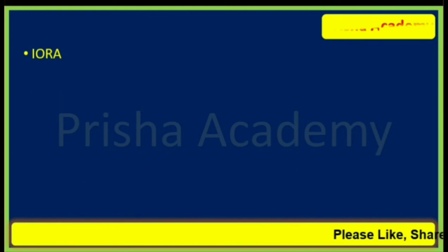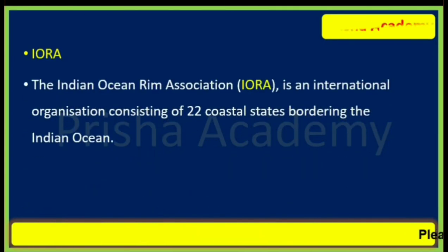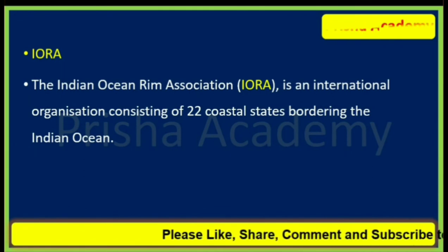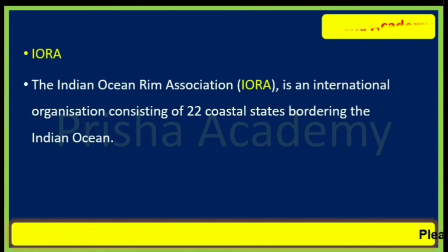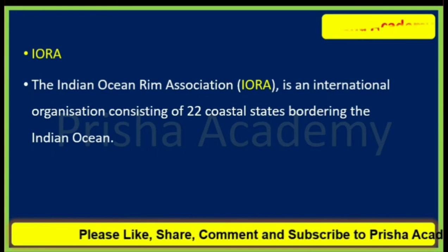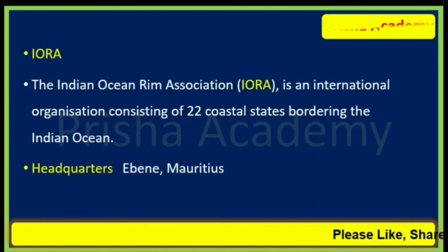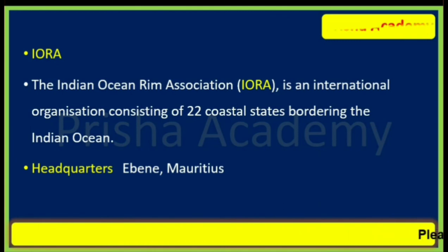Next is IORA — the Indian Ocean Rim Association. It is an international organization consisting of 22 coastal states bordering the Indian Ocean. Its headquarters is in Ebène, Mauritius.